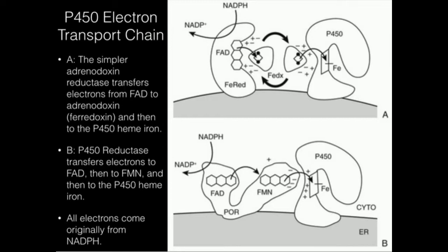That's how the heme iron of P450 gets its electrons — it requires adrenodoxin reductase in the mitochondria. Generally, all P450s in the mitochondria use adrenodoxin reductase. However, if we're talking about a P450 in the smooth endoplasmic reticulum, where most of them are, it's going to use a different electron transfer system. This POR — P450 oxidoreductase, normally called cytochrome P450 reductase — is the enzyme used. The initial step is the same: NADPH transfers two electrons in one step to FAD. But this time, P450 reductase has another flavin, FMN. FAD one at a time transfers electrons to FMN, and then FMN transfers that electron to the heme iron of P450.